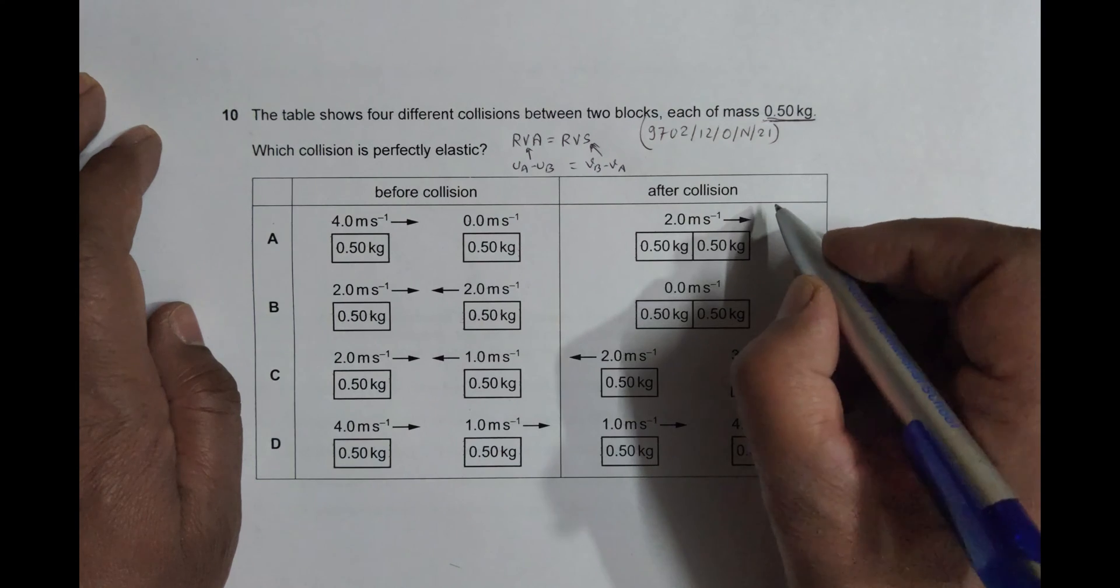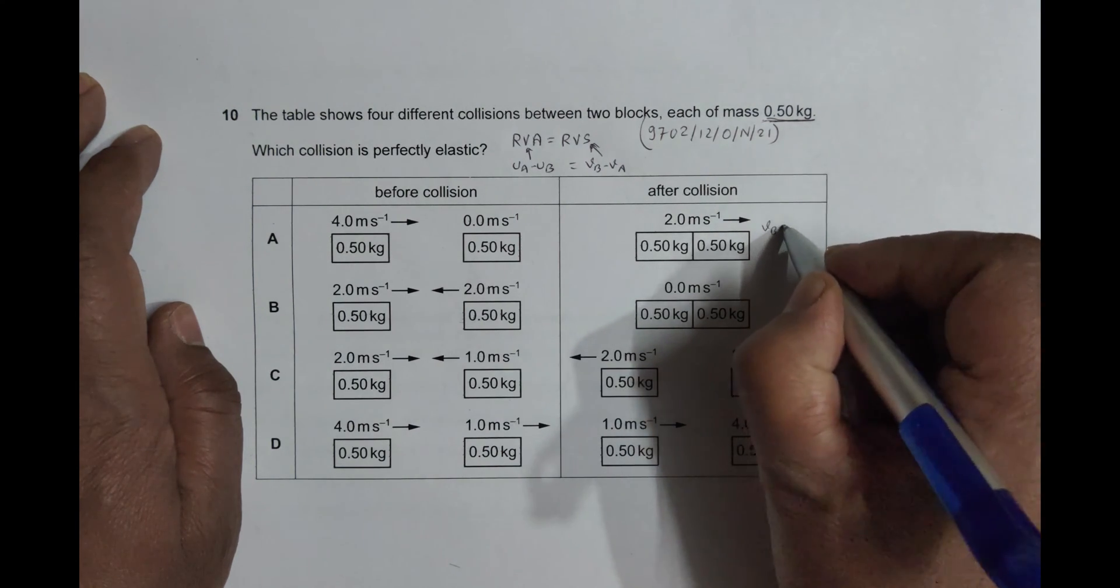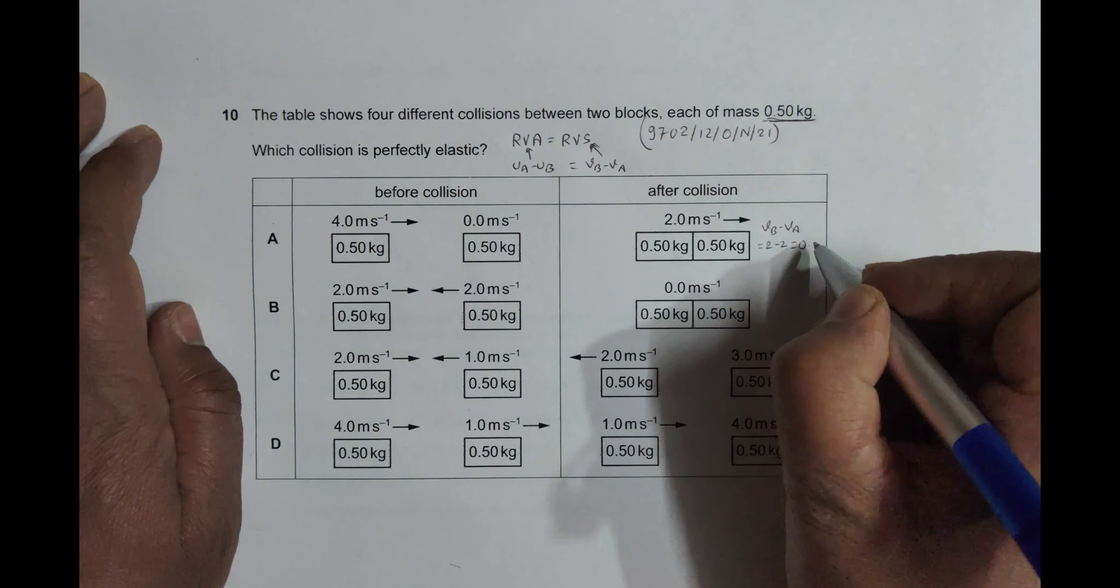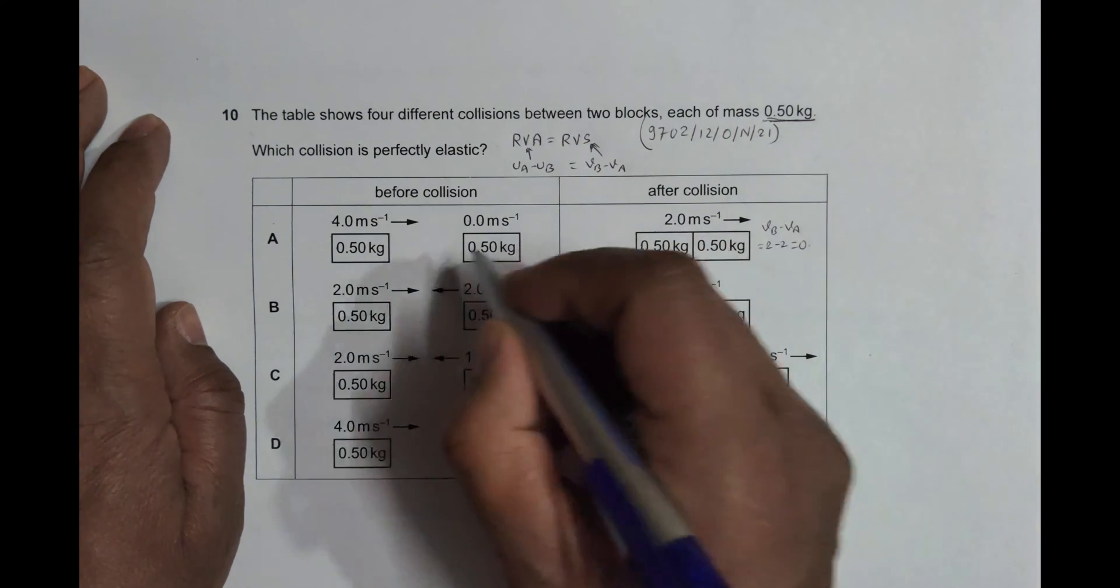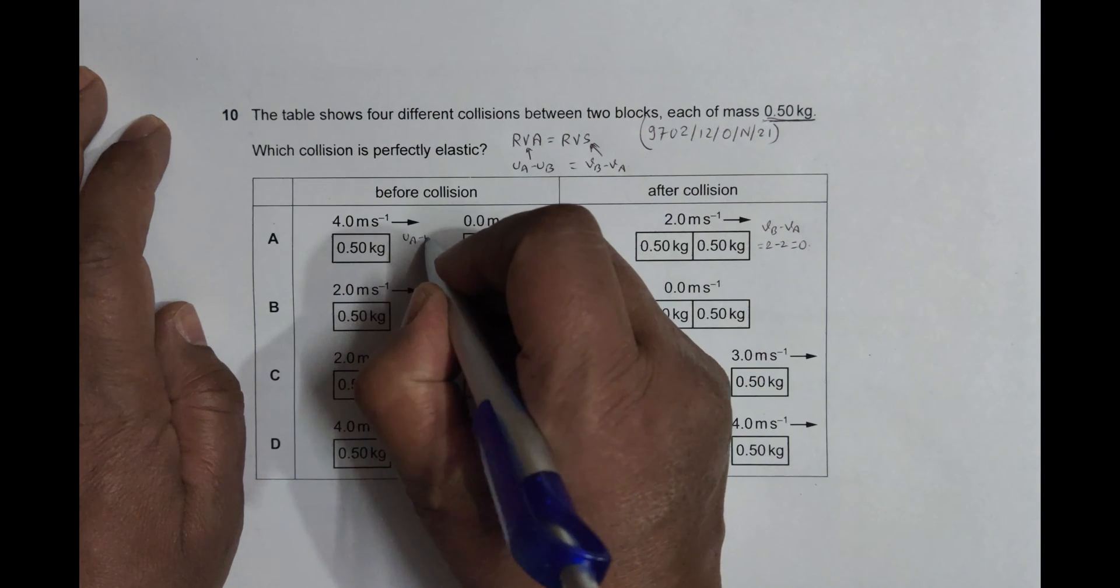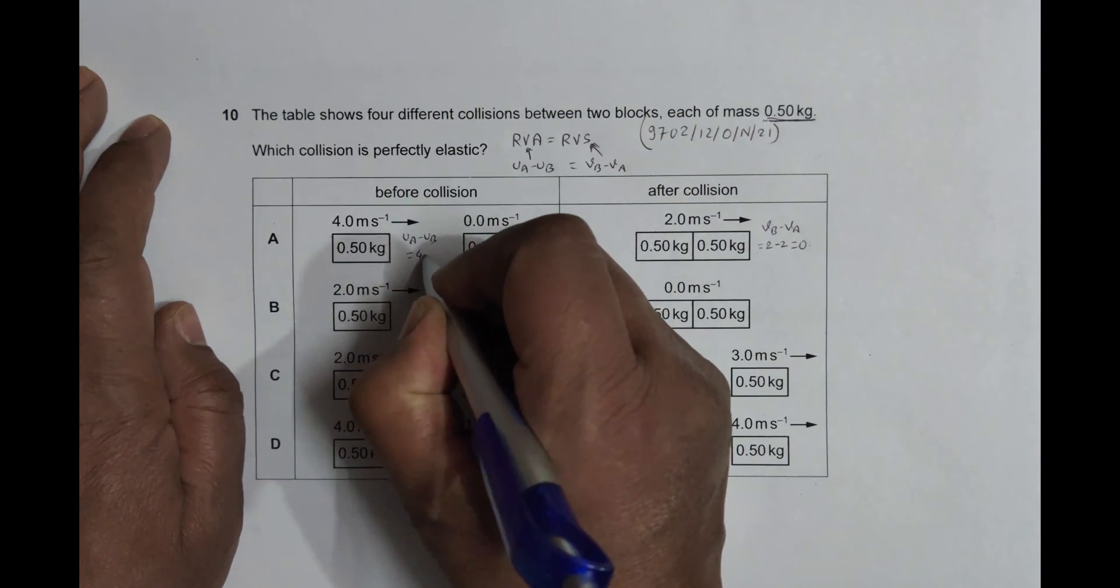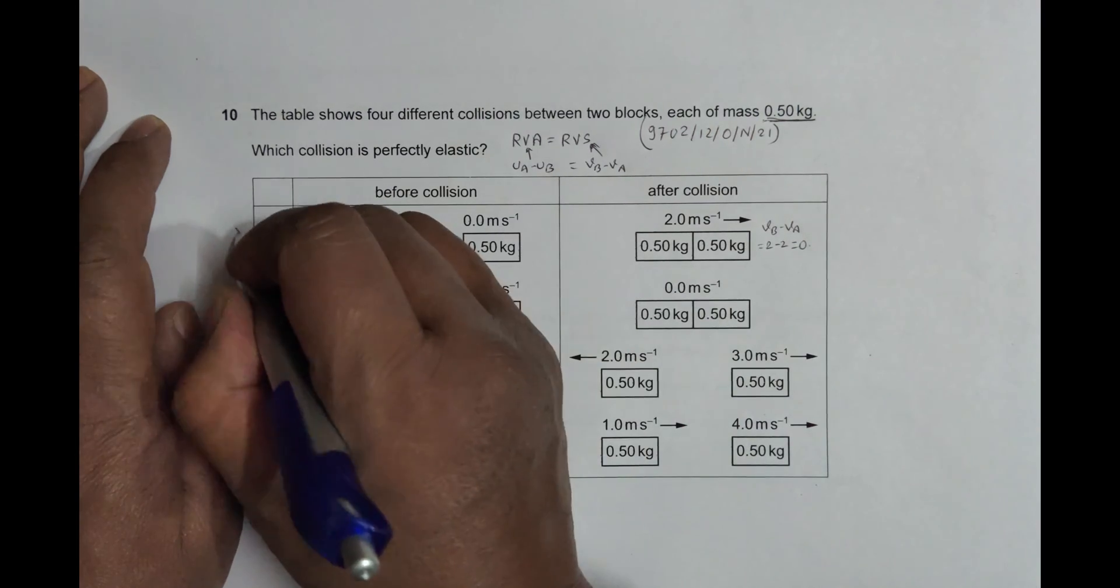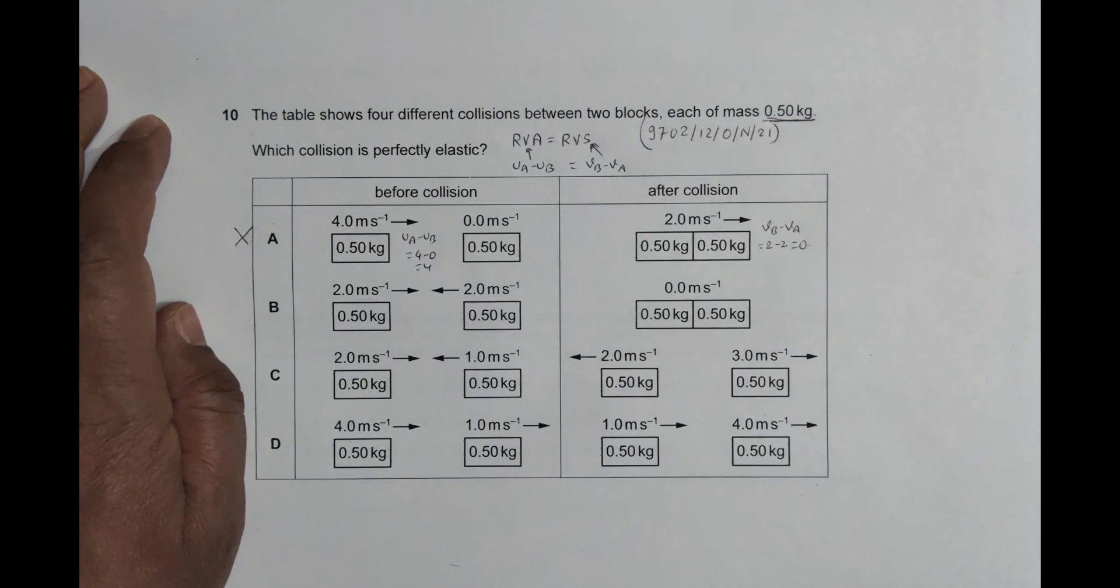And here, u_a minus u_b will be equal to 4 minus 0, equal to 4. So 4 and 0 are not equal, so this does not qualify.